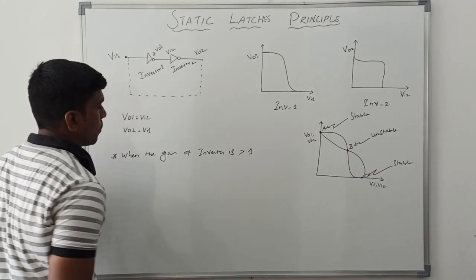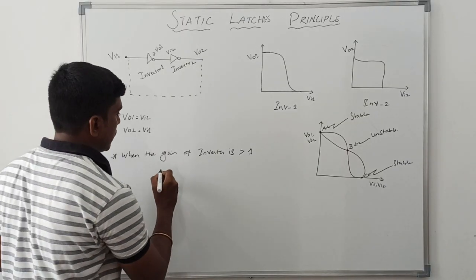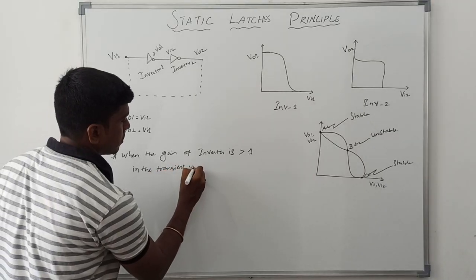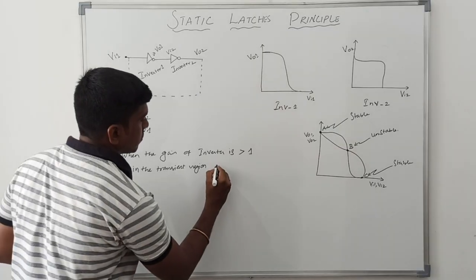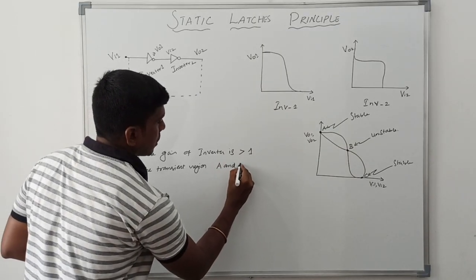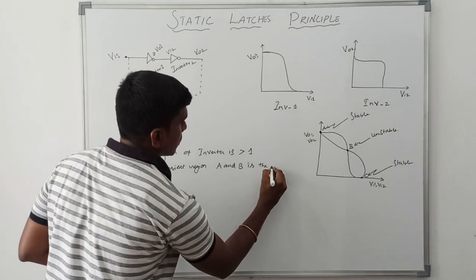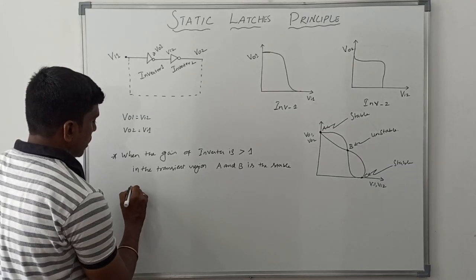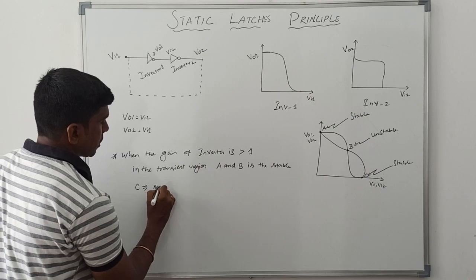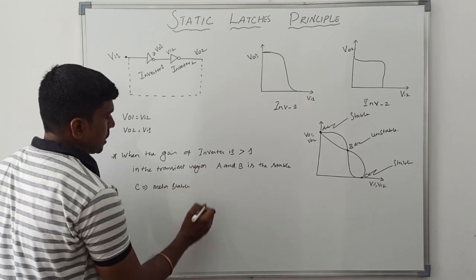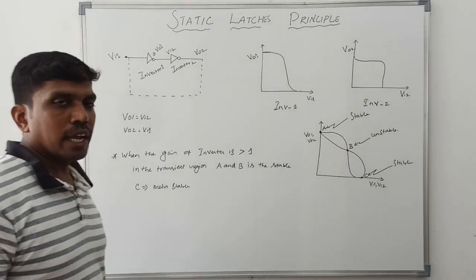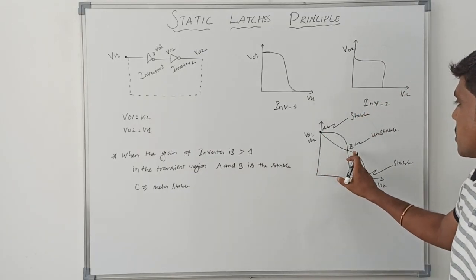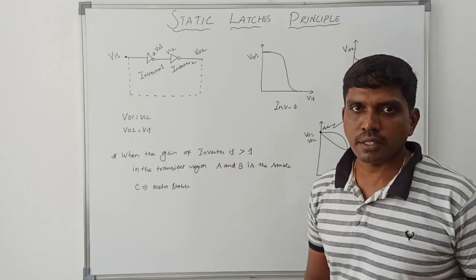When the gain of the inverter is greater than one in the transient region, points A and C represent the stable region, and point C — under certain conditions — is represented as a metastable point.